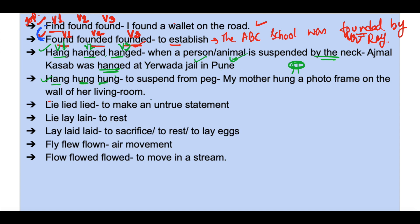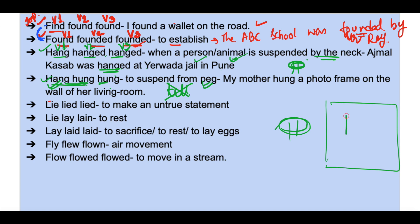Hang, hung, hung means to suspend from a peg — that is, when you don't suspend an animal or a person by the neck, and you don't kill. For any inanimate object, use this form. For example: 'My mother hung a photo frame on the wall of her living room' — she hung the photo frame on a peg on the wall.